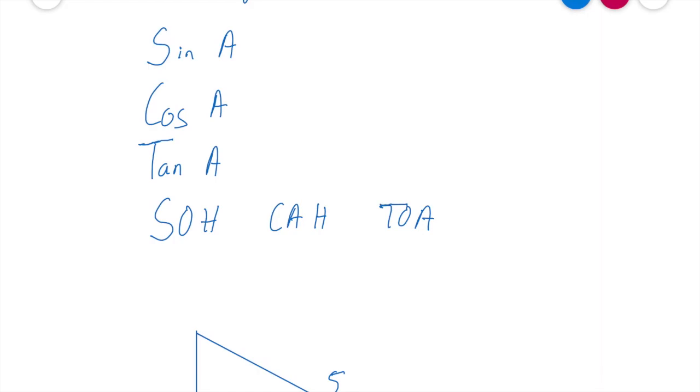Now, in the last lesson we learned how to find the hypotenuse, opposite and adjacent sides of a triangle. So if you don't remember that, click back up and watch that video. There's a link in the top right corner of the screen there now.